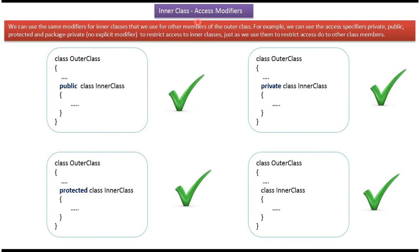In this video tutorial I will cover what are the access modifiers we can apply for inner class. For inner class we can apply public access modifier, private access modifier, protected access modifier, and package private access modifier. Package private access modifier means no explicit modifier.